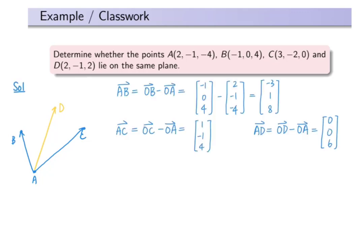Let's construct vectors AB, AC, and AD. Then we evaluate the triple scalar product: vector AB dot (vector AC cross vector AD). Using this formula, we put the entries of vectors AB, AC, and AD into the first, second, and third rows respectively.